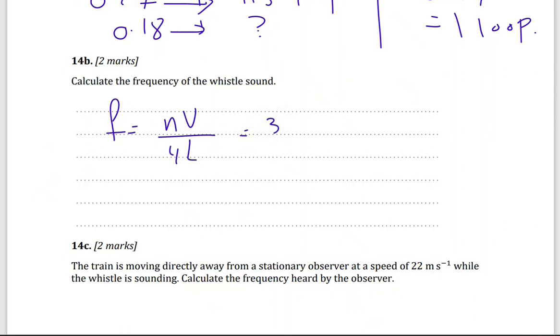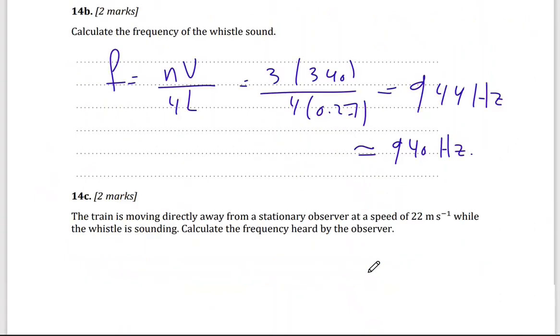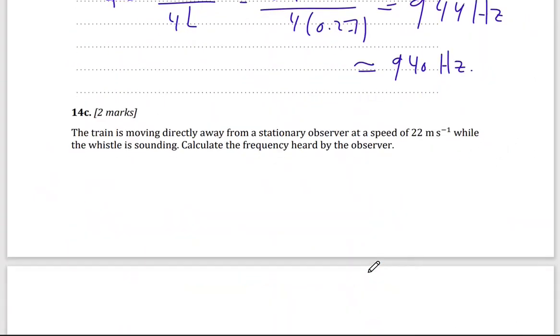Third harmonic, so N is 3. The velocity of sound in air, 340, divided by 4 times 0.27. And I will get 944 hertz, or second inverse. I can round it to two significant figures, 940 hertz.